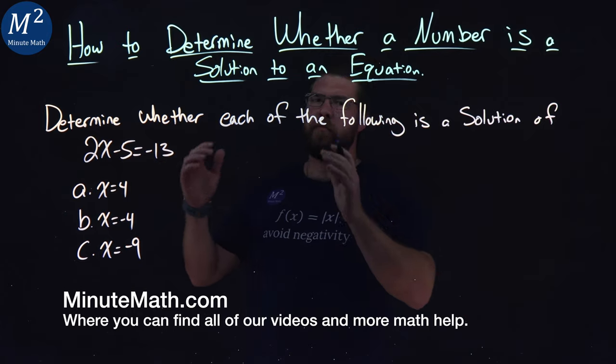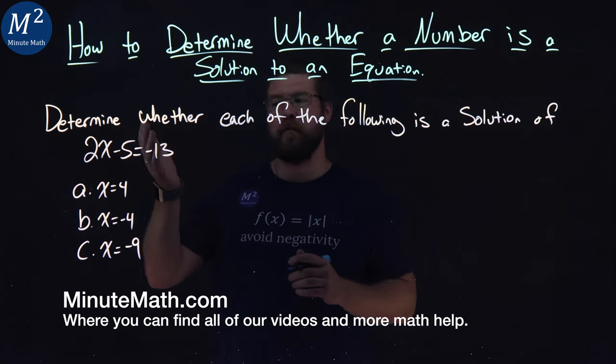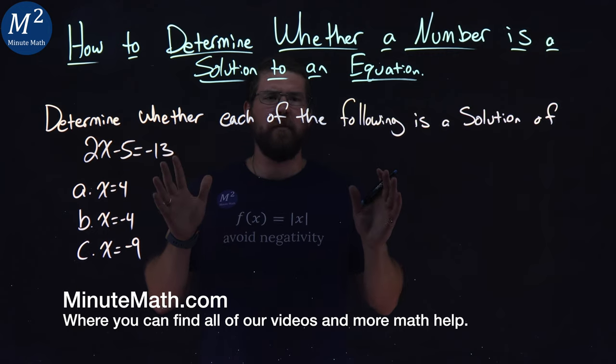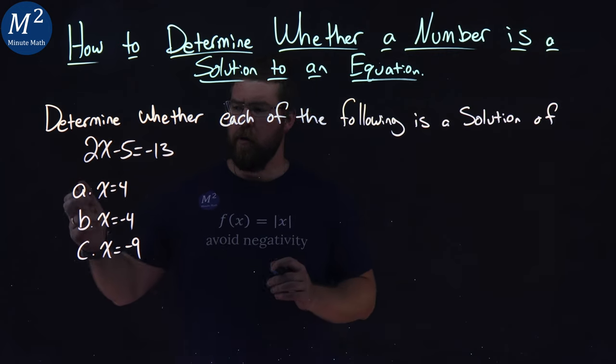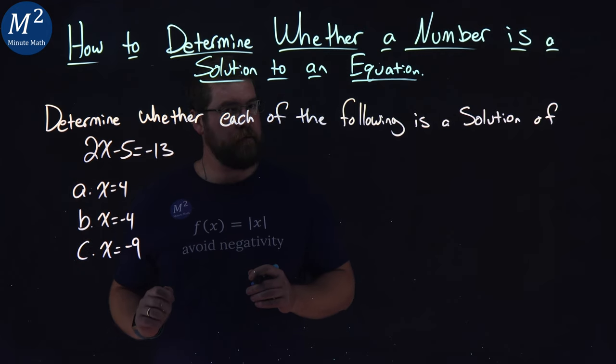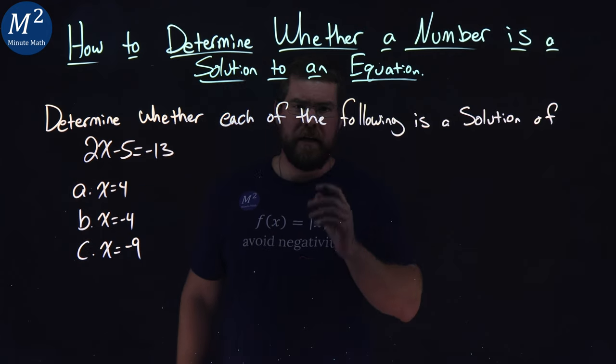We're given this problem here. We have 2x minus 5 equals negative 13, and we want to determine whether each of the following is a solution of that equation. We have x equals 4, x equals negative 4, and x equals negative 9.